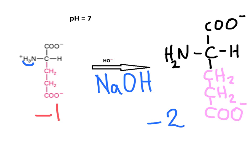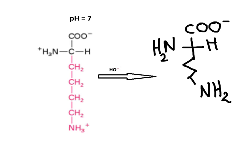Initially we have plus one, negative one, negative one, and now we only have the two negative charges on the two carboxylic acid groups. Now with the amino acid lysine at pH 7, it has a net charge of plus one. If we add a solution of sodium hydroxide, now we have two protons to be lost to the base, and there is a change in ionization state, and the net charge will be negative one.